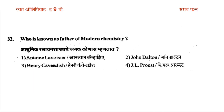Who is known as the father of modern chemistry? Options are: first, Antoine Lavoisier; second, John Dalton; third, Henry Cavendish; fourth, J.L. Proust. The answer is the first option — Antoine Lavoisier is known as the father of modern chemistry.